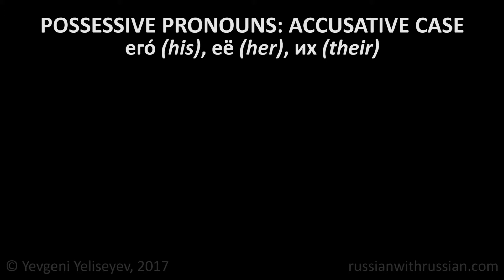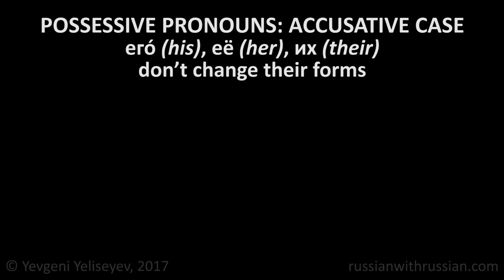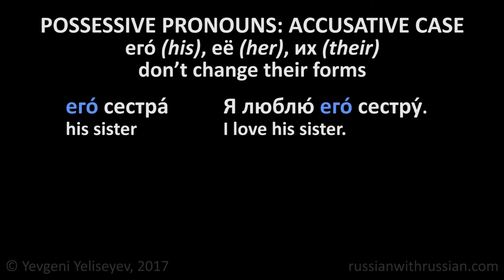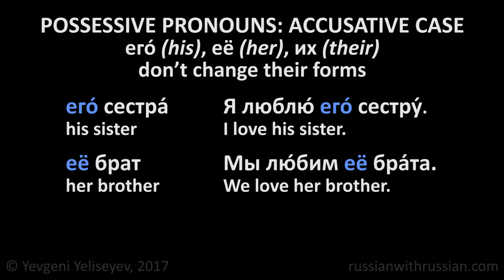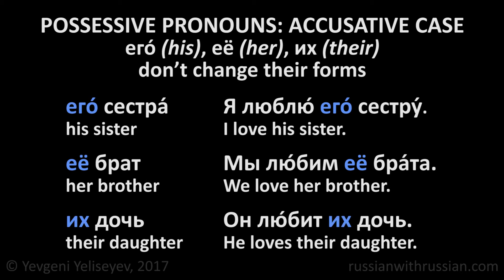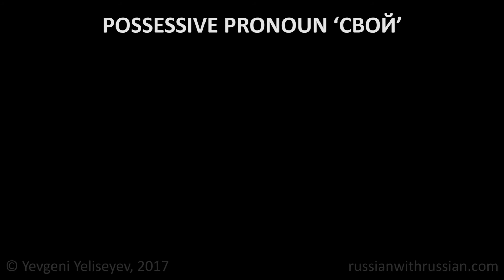As usual, the pronouns его, её, and их in the meaning of his, her, and their don't change their forms. Его сестра – his sister. Я люблю его сестру – I love his sister. Её брат – her brother. Мы любим её брата – we love her brother. Их дочь – their daughter. Он любит их дочь – he loves their daughter.